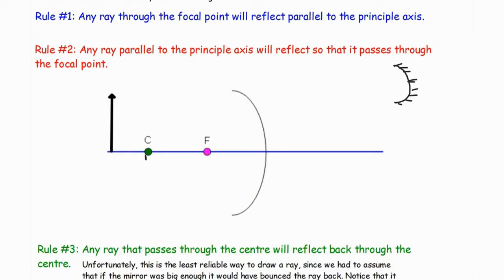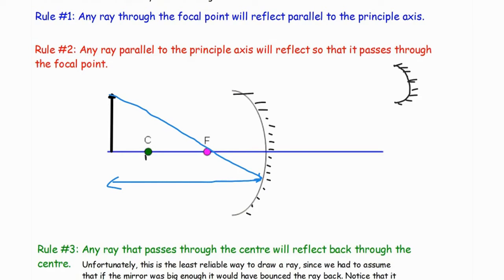We can draw ray diagrams to learn about the mirror. This side is the back of the mirror, the other side is the front. The first ray: any ray that enters through the focal point is going to be reflected parallel to the principal axis. The next rule: any light ray that enters parallel to the principal axis is going to be reflected through the focal point.